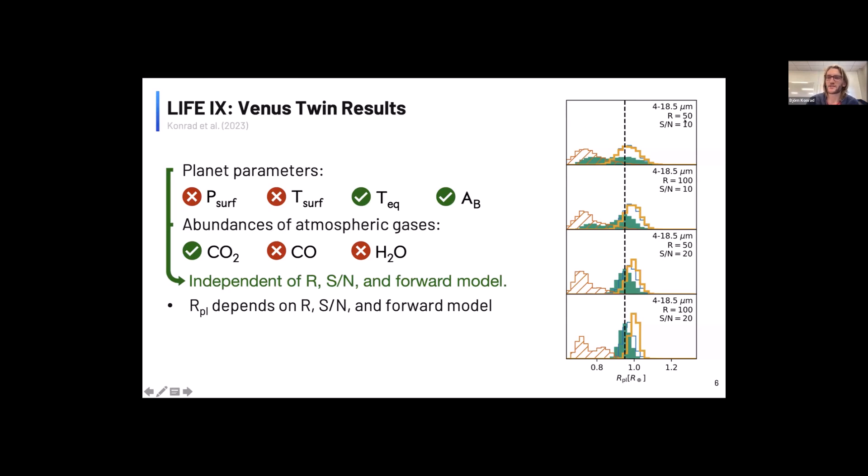And you see that for the low resolution and signal to noise cases, actually the cloud-free model yields the better estimate for the radius. Whereas if we go to the better spectra, so the higher resolution and higher signal to noise ratio spectra, we see that at this point the true model starts winning out.